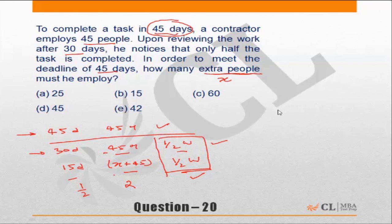That means x plus 45 should be equal to 90, or the number of extra men that he should employ is equal to 45. Hence, the correct answer is choice G. In such questions, always be careful.